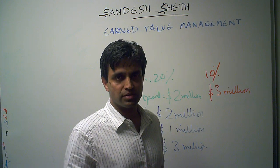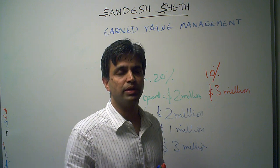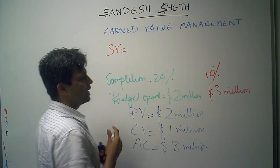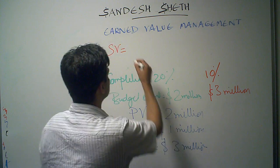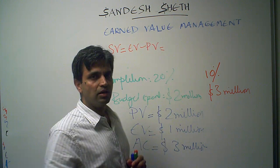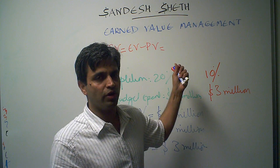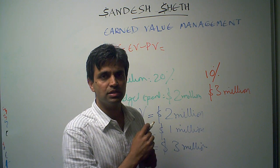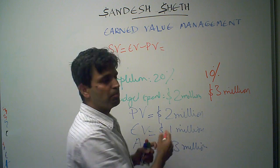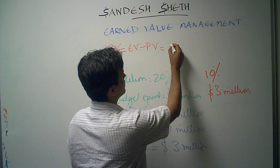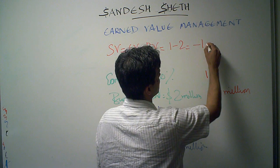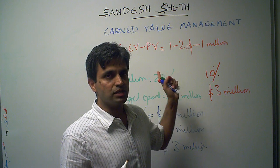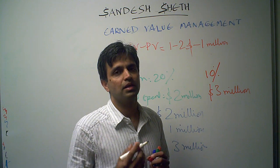The first metric in earned value management is schedule variance. Schedule variance is defined as earned value minus planned value. I was supposed to accomplish $2 million worth of work and I have accomplished only $1 million, so my schedule variance is negative $1 million.